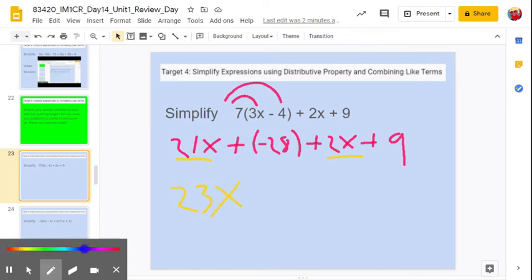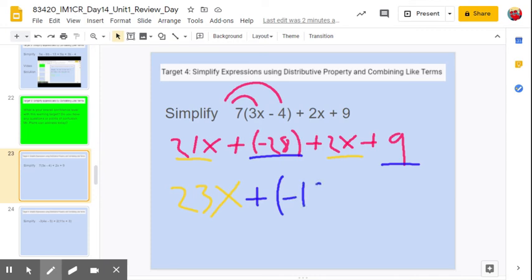And then we're going to combine the negative 28 and the positive 9. So what's the difference between 28 and 9? That's 19. And then what sign am I going to keep? That's right. The negative 28 has the greatest absolute value. It's the furthest away from 0. So we're going to keep the negative sign. So we're going to say it's going to be plus negative 19.